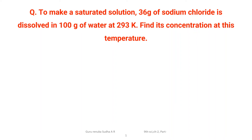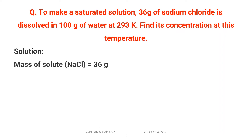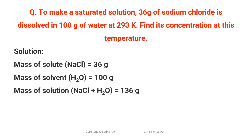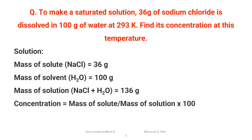The next question: to make a saturated solution, 36 grams of sodium chloride is dissolved in 100 grams of water at 293 Kelvin. Find the concentration at this temperature. Here is the solution. Mass of solute NaCl is 36 grams. Mass of solvent water is 100 grams. When you mix solute and solvent you get a solution, so mass of solution is 136 grams.